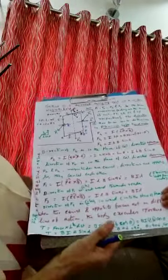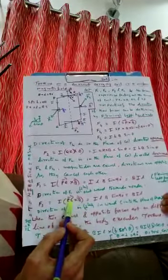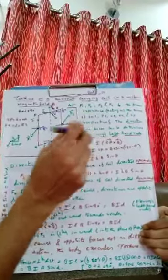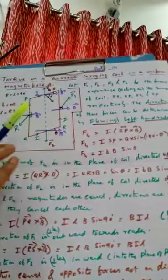Similarly, for arm RS: F3 = I × RS × B × sin90° = ILB. The direction of F3 is inward. So F1 is outward and F3 is inward — these two forces are equal, opposite, and parallel, but they are not acting on the same line of action. As studied in class 11, two equal and opposite forces acting on different lines of action constitute a couple and exert a torque. So the coil will rotate.